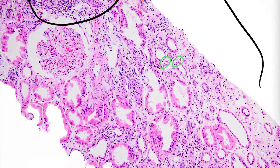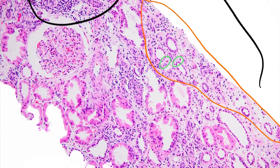We know we are in a good portion of unscarred cortex, at least in this area here, as we can see a component of interstitial edema, which means that while there is injury and edema, there has not been a lot of fibrosis laid down at this time.